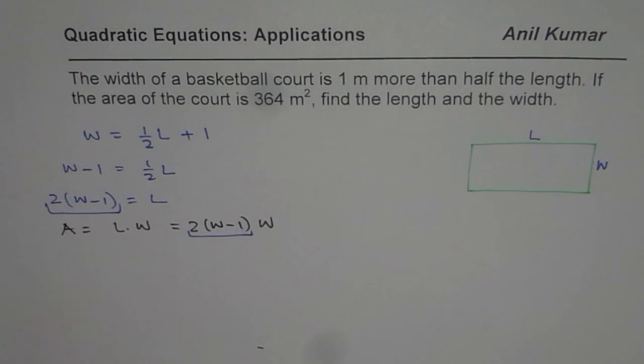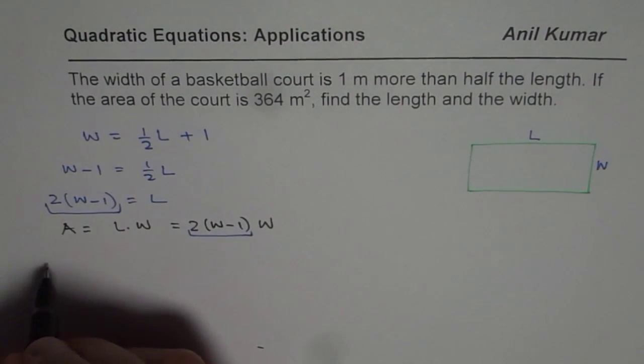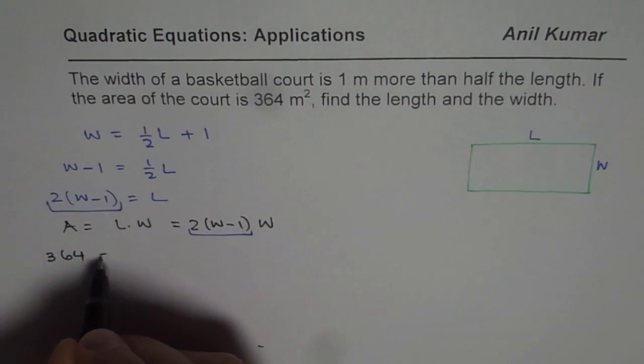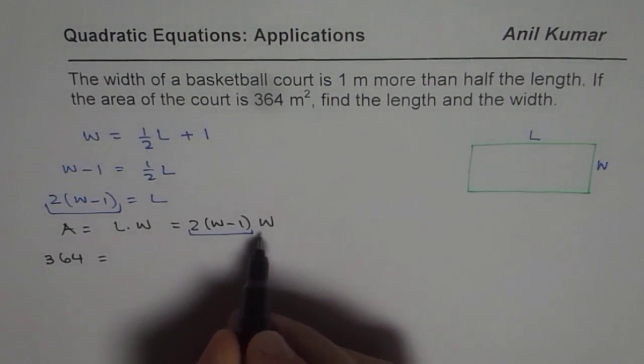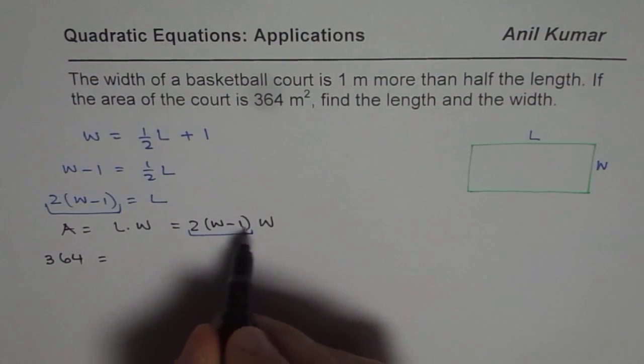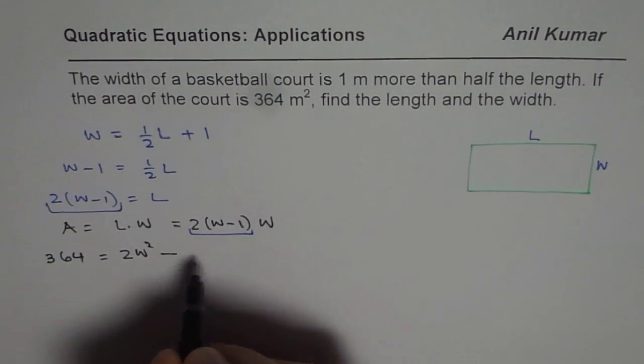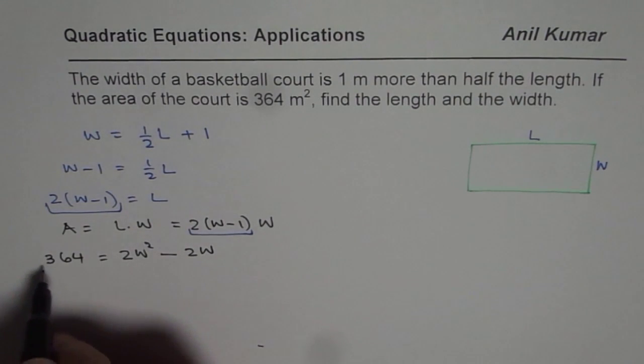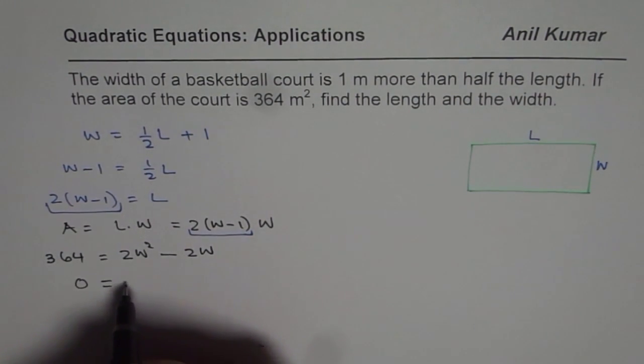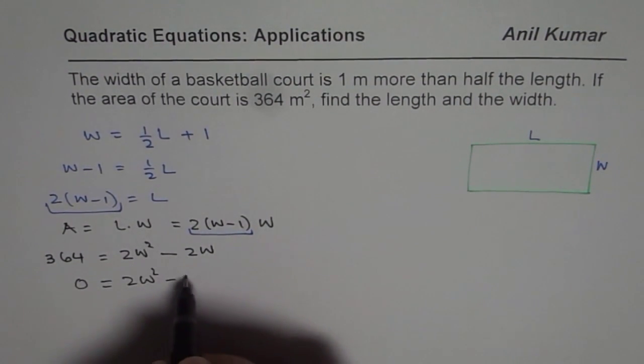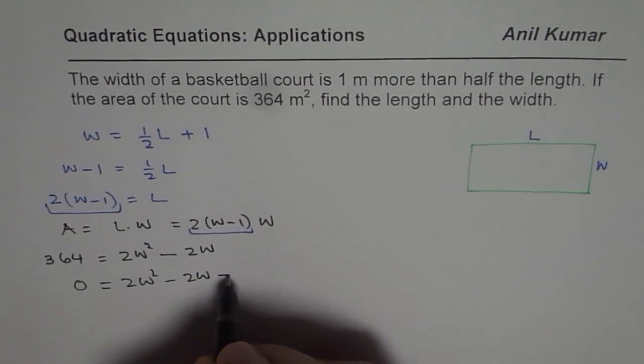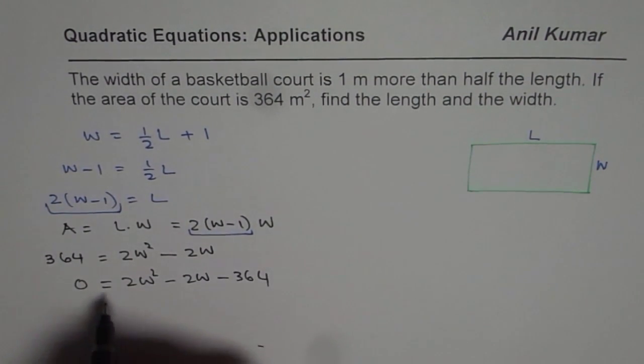Now we can substitute the value of area given to us, which is 364. Expand this and calculate W. So when we open this up, we get 2W squared minus 2W. So when we open this up, we get 2W squared minus 2W minus 364.